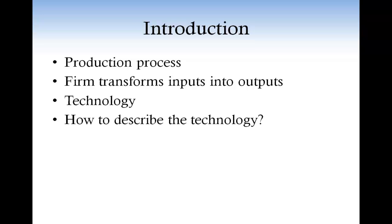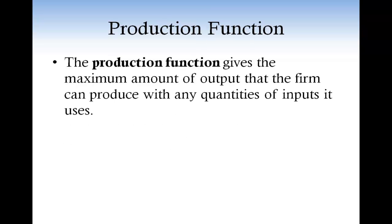Here you could ask, how do you describe the technology that is available to the firm? The answer is with a function that we call the production function. For simplicity, assume that the firm produces only one output. The production function gives the maximum amount of output that the firm can produce with any quantity of input it uses.